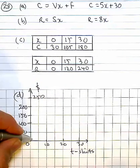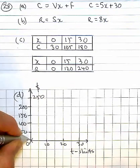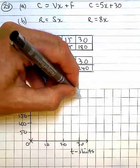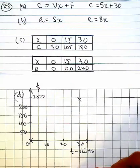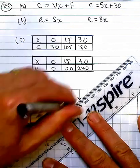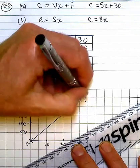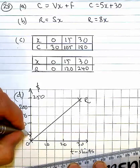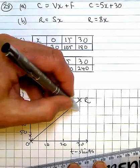I'm going to do the revenue first, starting at 0, going up to $240. And for the cost function, starting at $30, going up to $180.